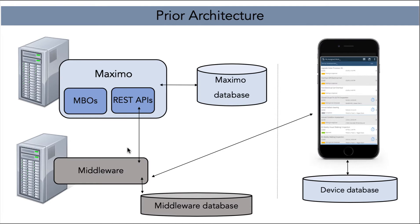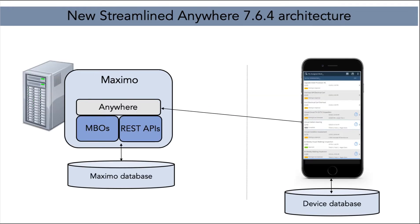As we've moved forward into the new 7.6.4 architecture, we've streamlined and simplified this. We now have two components. Maximo continues to be our main feature focus — that's where we build everything off our platform. And then we have our mobile device on the far right-hand side, which now communicates directly with Maximo. We don't have to go through the middleware component.